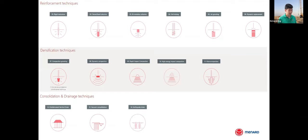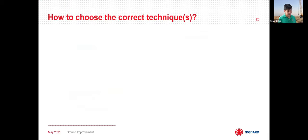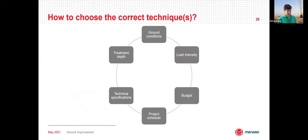MENAD offers about 14 ground improvement methods globally. When choosing the right technique, several factors must be considered: ground condition, load intensity, budget, project schedule, technical specifications, allowable settlement, and desired bearing capacity. Some techniques also have limitations on the depth of treatment achievable, and these must be factored into the selection process.